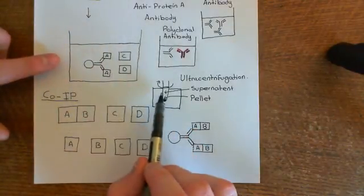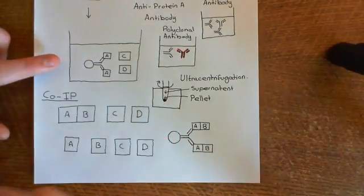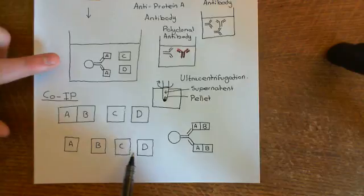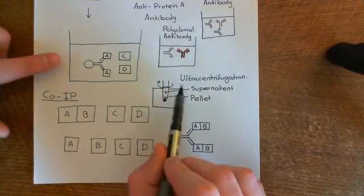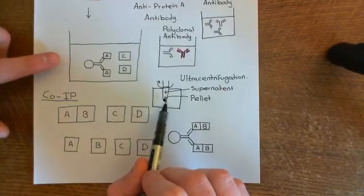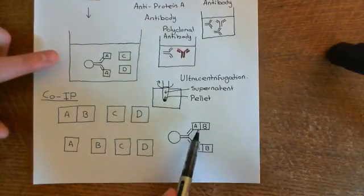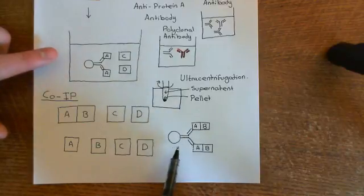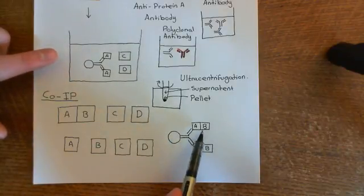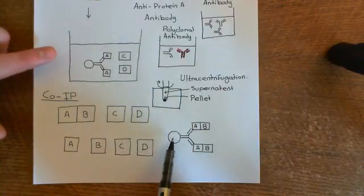Then, when you ultracentrifuge it, protein A will drop to the bottom with the antibody molecules and the beads, but protein B, C, and D will remain in the supernatant, and therefore will be removed. So, you won't find protein B within the pellet. So, the presence of protein B within the pellet shows that it must have bound somehow to the beads, and the only way it can bind to the beads is if it has bound to protein A, which is bound to the antibody, which is bound to the beads.